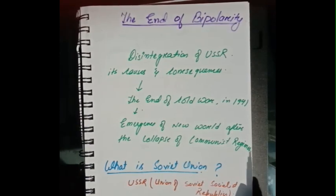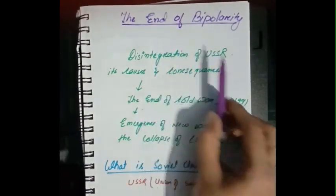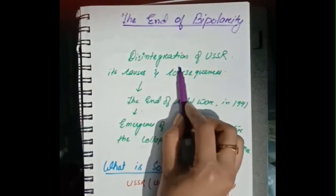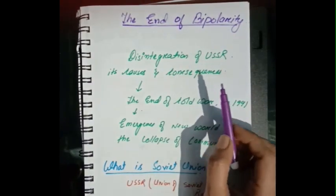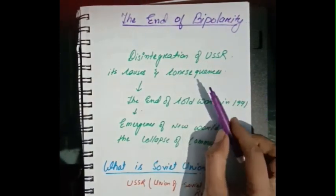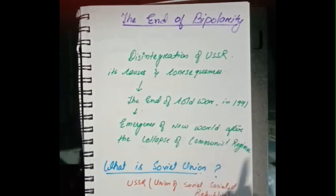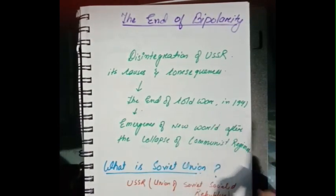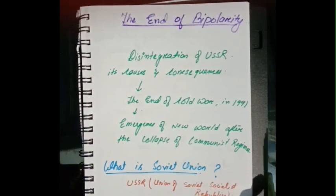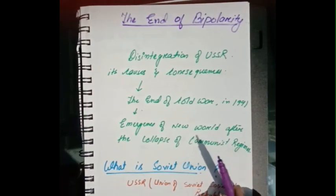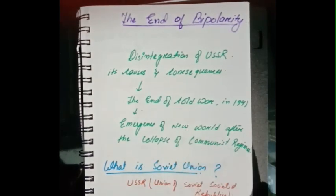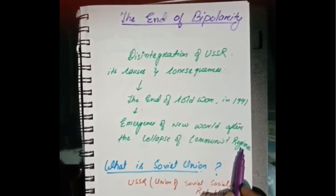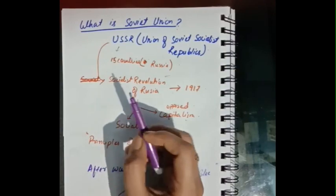Here in Chapter 2, 'The End of Bipolarity,' we will see how the disintegration of the USSR took place and its causes and consequences. We'll also see how the end of the Cold War took place in 1991 and discuss what happened to the rest of the world after the collapse of the communist regime.